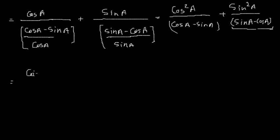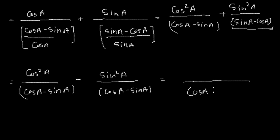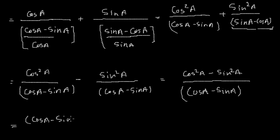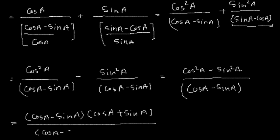This further can be written as cos squared A divided by cos A minus sin A, minus sin squared A divided by cos A minus sin A. Since the denominator is common, the LCM will be cos A minus sin A and the numerator will be cos squared A minus sin squared A. Now, cos squared A minus sin squared A can be written as cos A minus sin A multiplied by cos A plus sin A, using the identity A squared minus B squared equals A minus B times A plus B, all divided by cos A minus sin A.